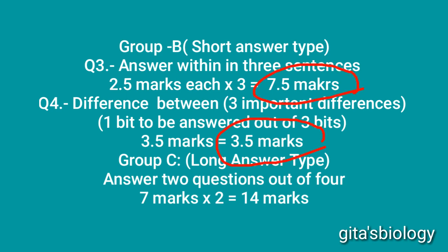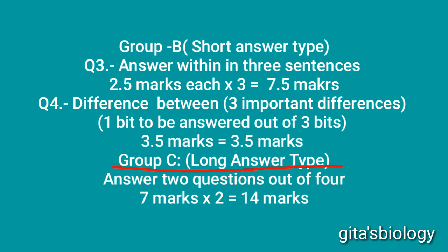Group A contains 10 marks, Group B contains 11 marks, and Group C contains 14 marks. Group C is long answer type — answer only two questions out of four. Each question contains 7 marks: 7×2 = 14 marks. The total is 35 marks in one and a half hours.